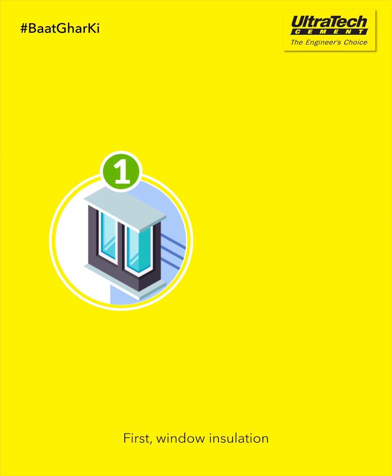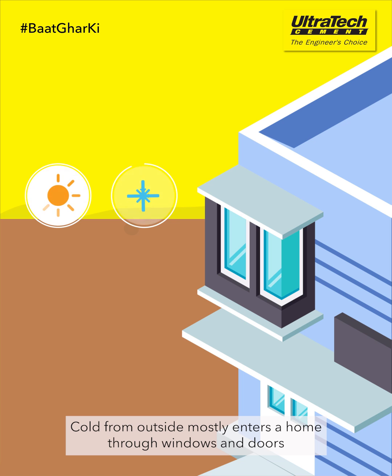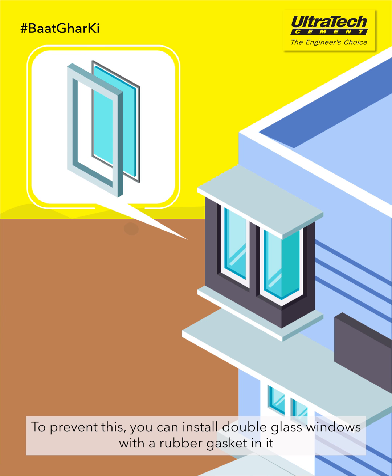First, window insulation. Cold from outside mostly enters a home through windows and doors. To prevent this, you can install double glass windows with a rubber gasket in it.